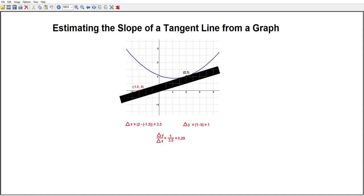So we're going to use that point. And we see delta x is then 2 minus minus 1.5 or 3.5. Change in x between the two points is 3.5. Change in y between those two points is 1 minus 0 or 1.